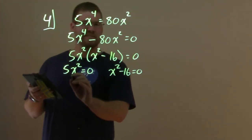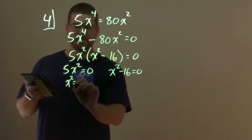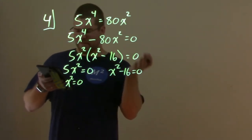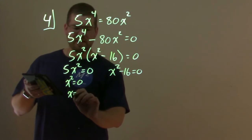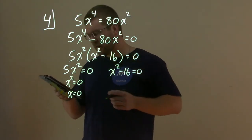5x^2 = 0 is pretty easy. Divide both sides by 5. We have x^2 = 0, right? 0 divided by 5 is 0. And then x just equals 0. Square root of both sides. Square root of 0 is 0. x = 0. Got it.